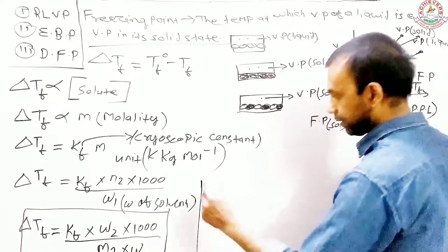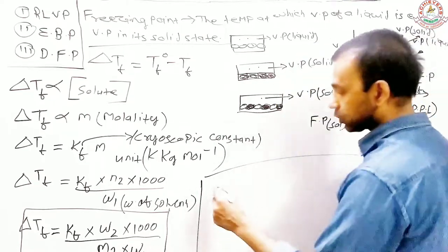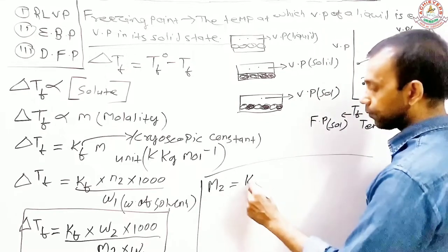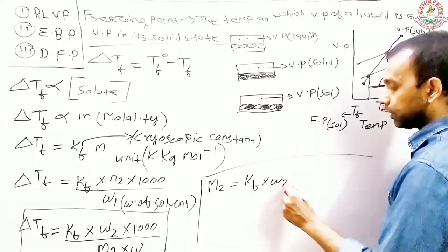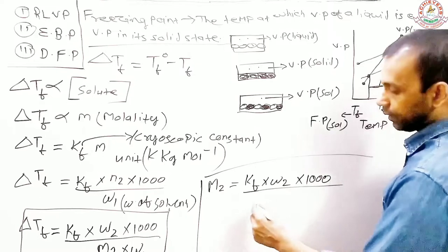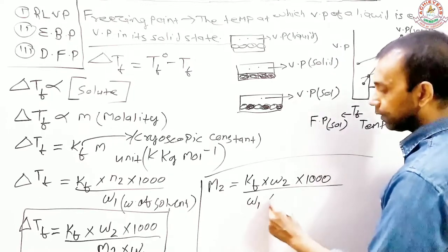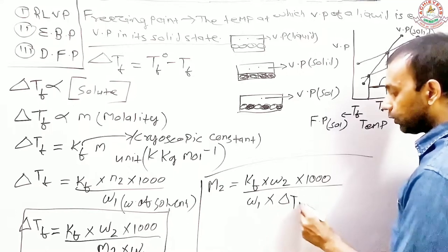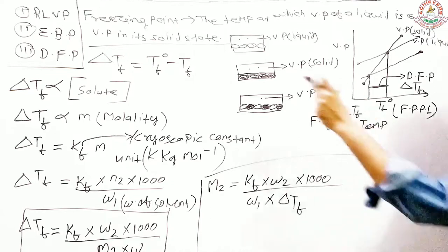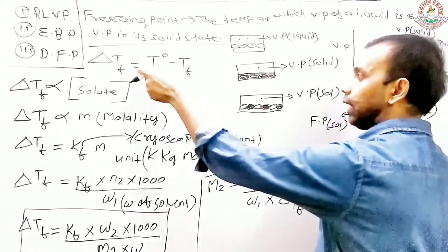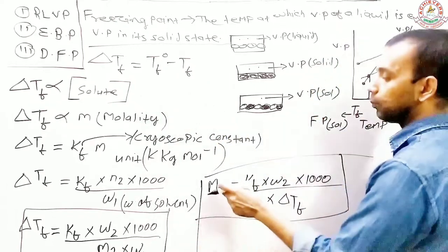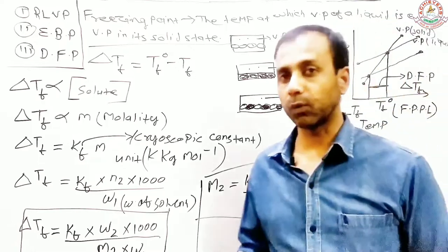Another formula you can derive is for the molar mass of the solute. M2 equals (Kf × W2 × 1000) / (W1 × ΔTf), where ΔTf can also be written as Tf° minus Tf. So this is another important equation for finding the molar mass of the solute when depression in freezing point is occurring.